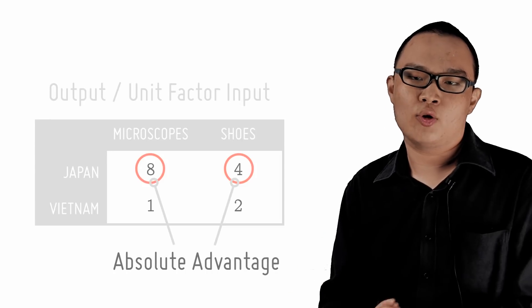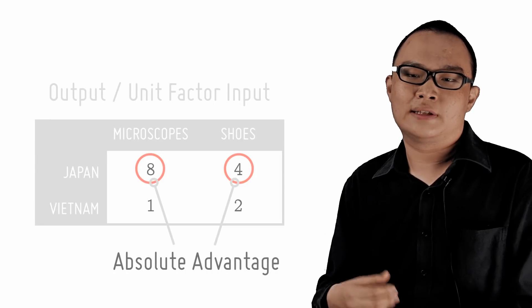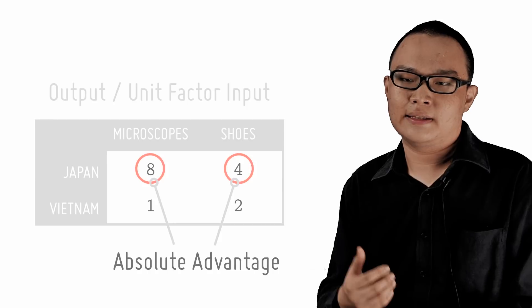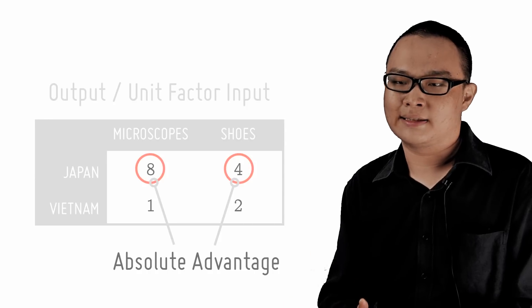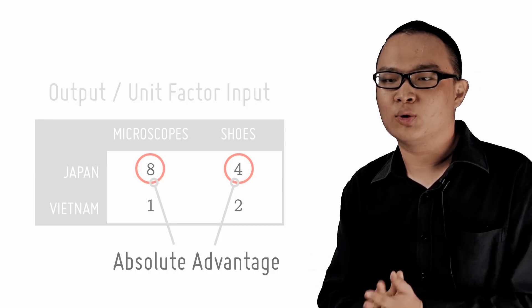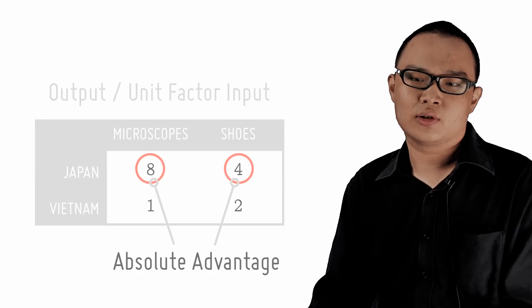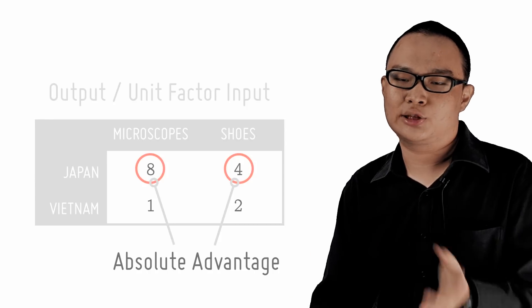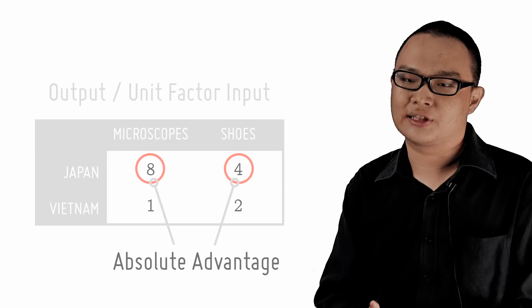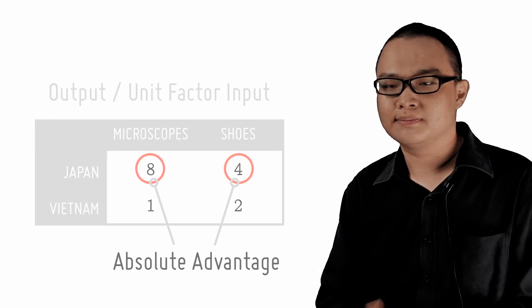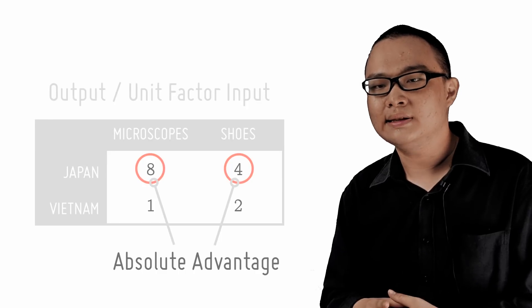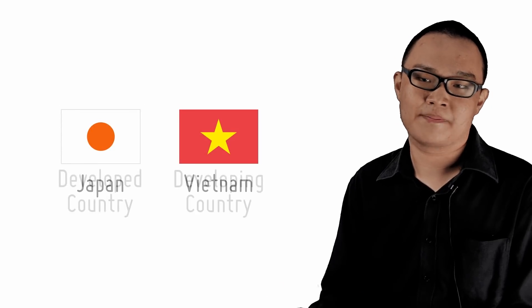Now, in this example, due to differing factor conditions in reality, this is more likely a case where one country enjoys absolute advantage in both goods. In particular, this is more common when we compare a developed country like Japan with a developing country like Vietnam.